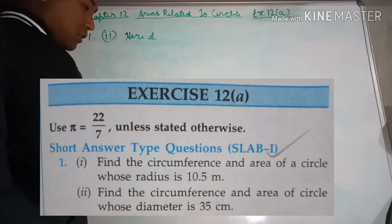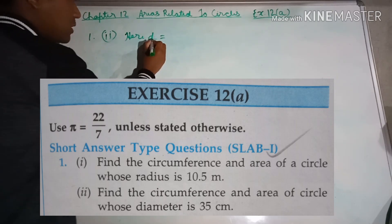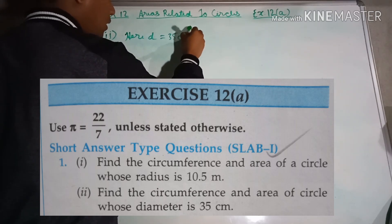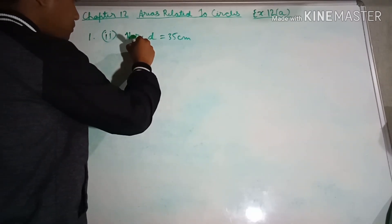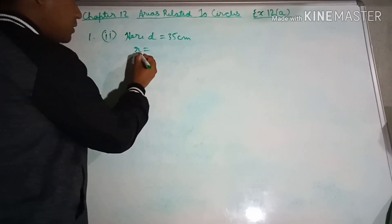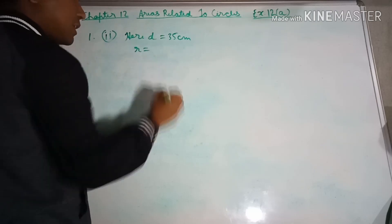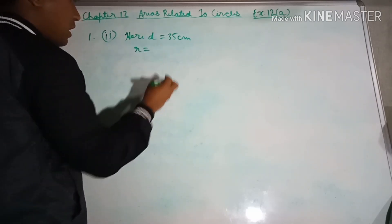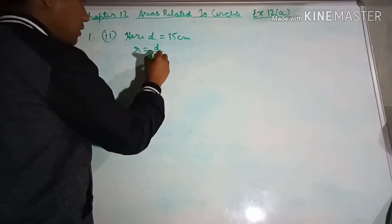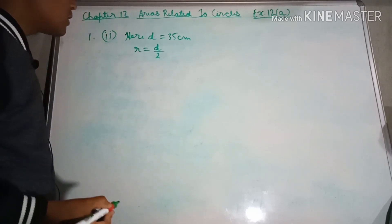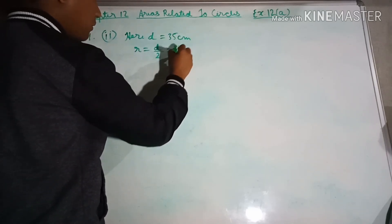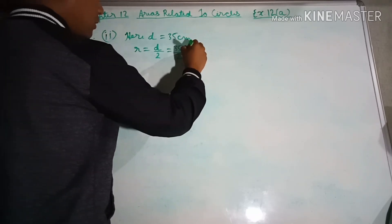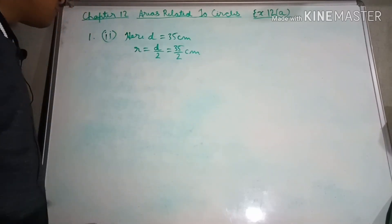Here, D equals diameter equals 35 centimeters. The radius R equals diameter divided by 2. So R equals 35/2, which is 17.5 centimeters.